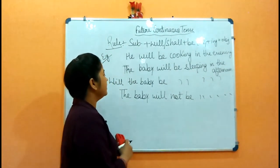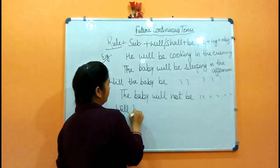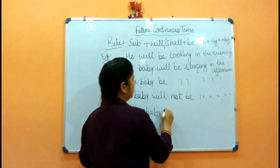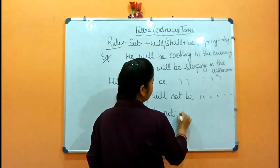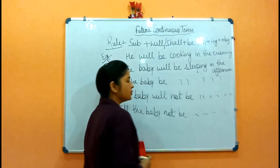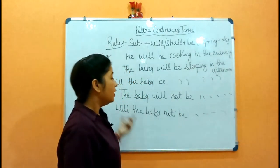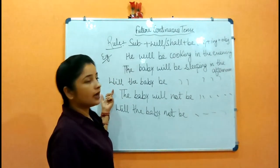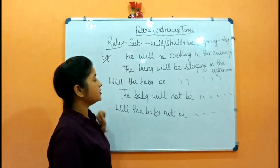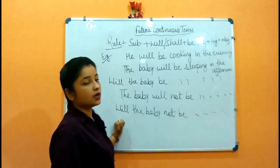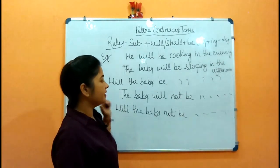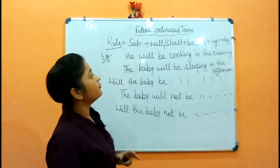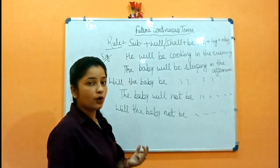The interrogative negative is: 'Will the baby not be sleeping in the afternoon?' — क्या baby जो है वो नहीं सो रहा होगा? So to summarize: this is your simple (affirmative), this is your interrogative, this is your interrogative negative, and this is your negative — all forms of future continuous tense. I hope you all understand the future continuous tense.